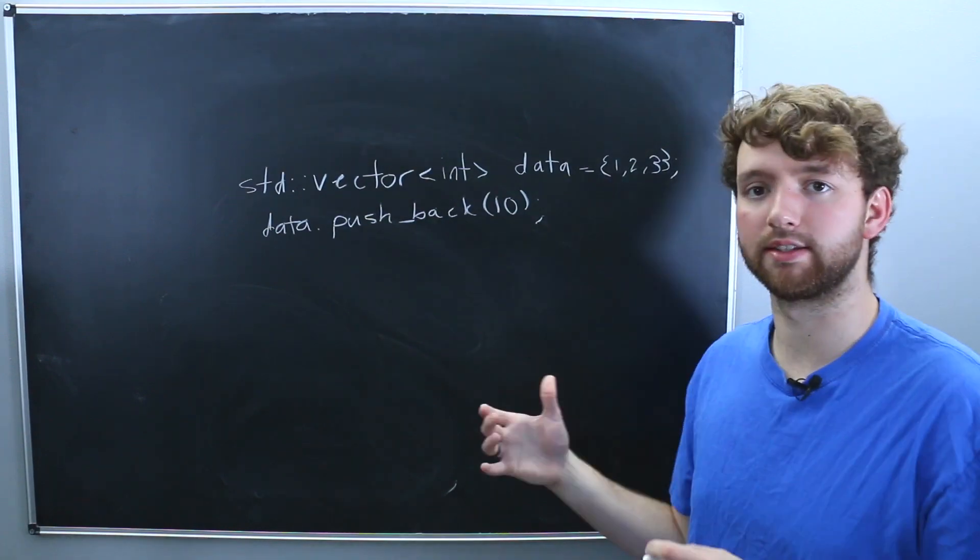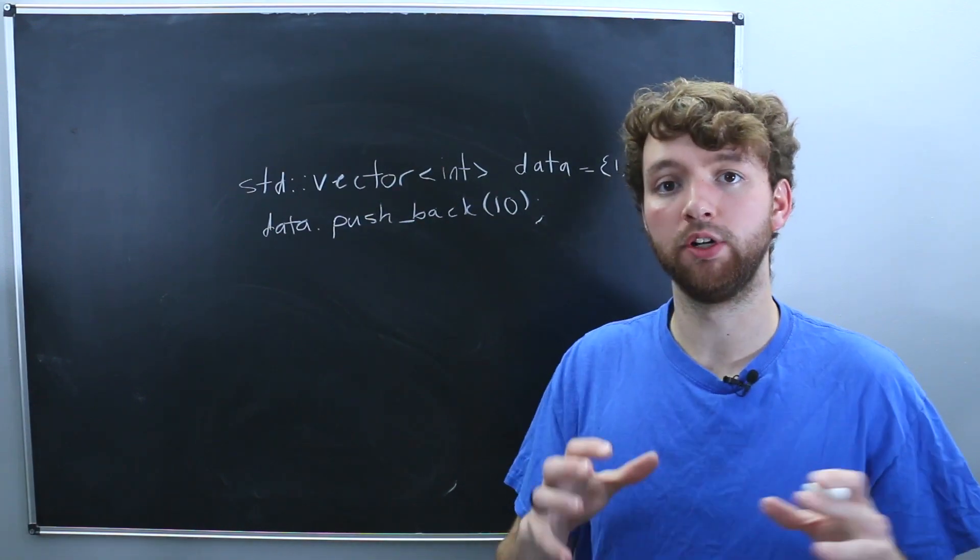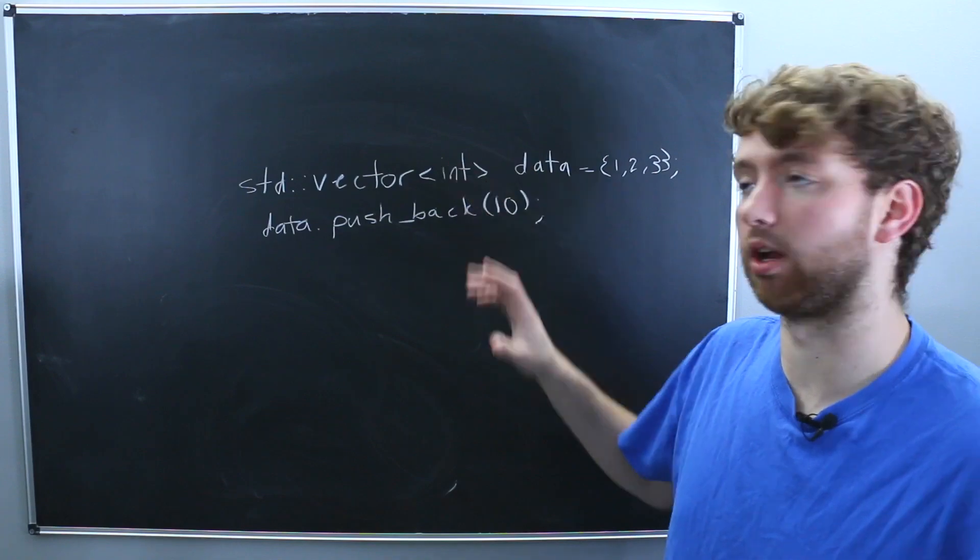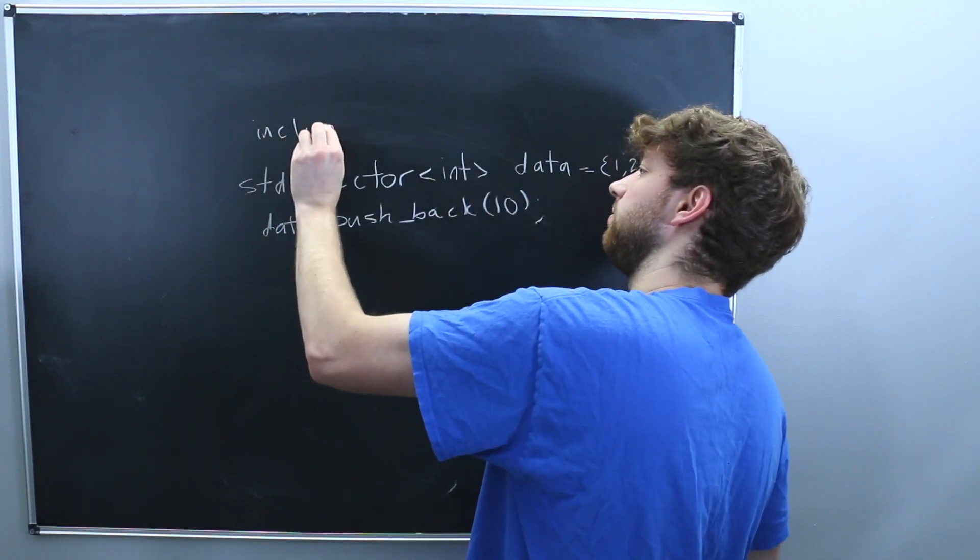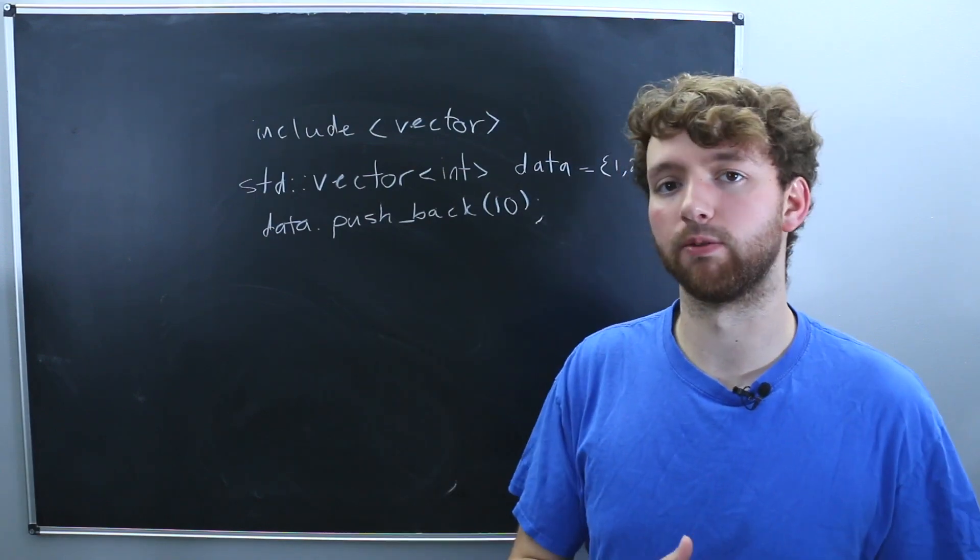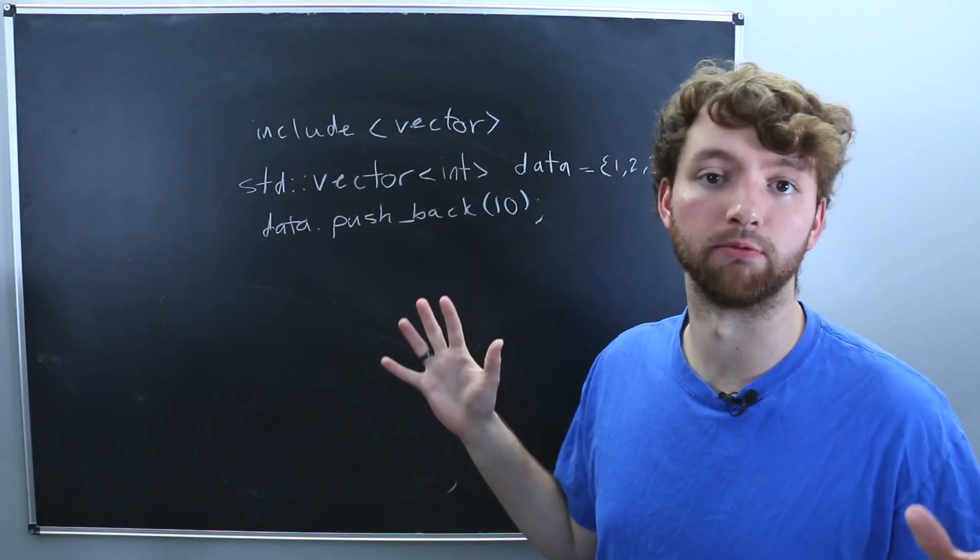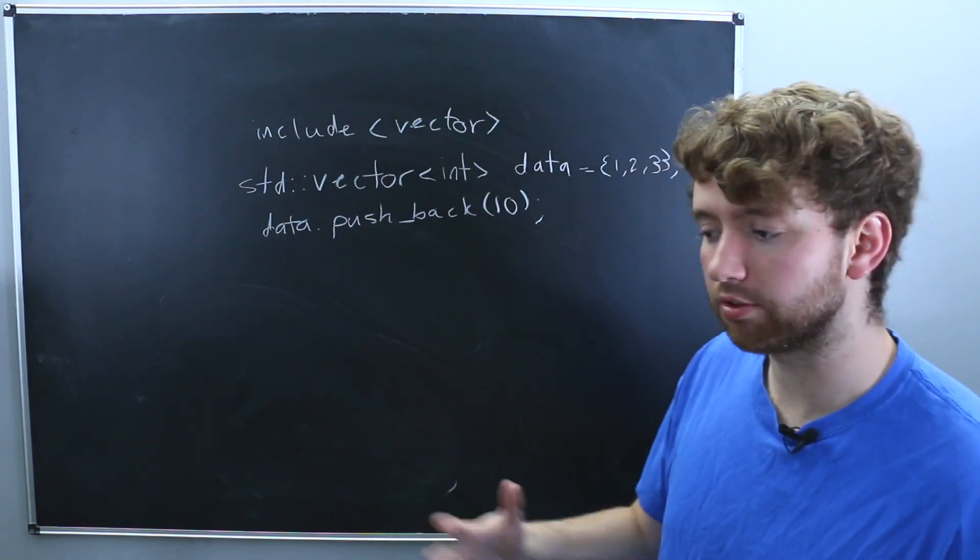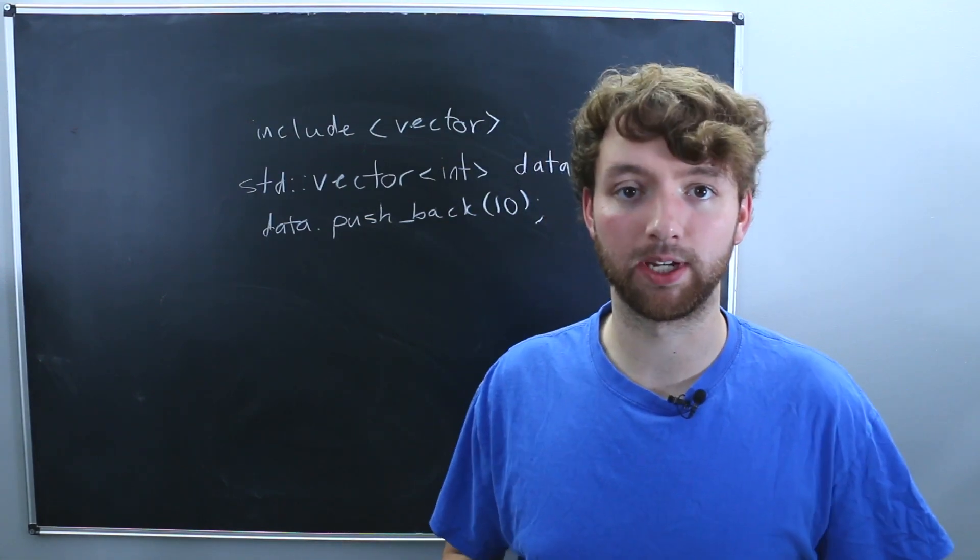So that's the recommended way. Instead of using new with arrays, this is what I would recommend. You also just need to make sure you include vector. So you'll probably see this more often than dynamic arrays using new. However, you might run into both. There are some other alternative ways of doing it, but that's all I'm going to talk about in this video.